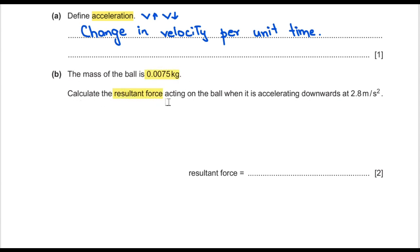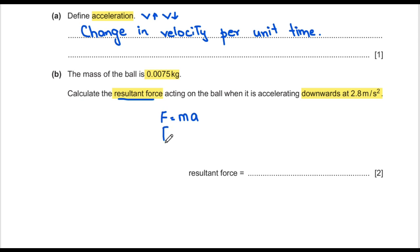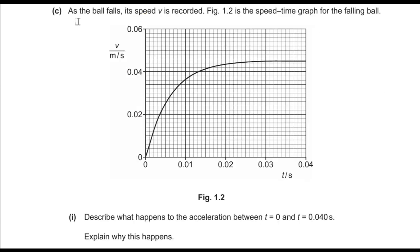Part B says the ball has mass 0.075 kg. Calculate the resultant force acting on the ball when it accelerates at 2.8 m/s². Using F = ma, mass is 0.075 and acceleration is 2.8, so the resultant force is 0.21 newtons.